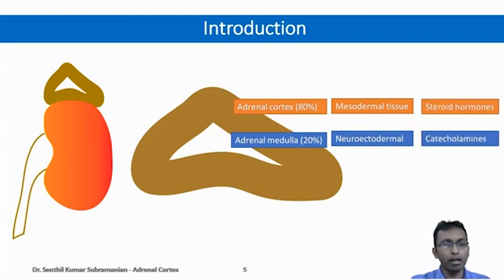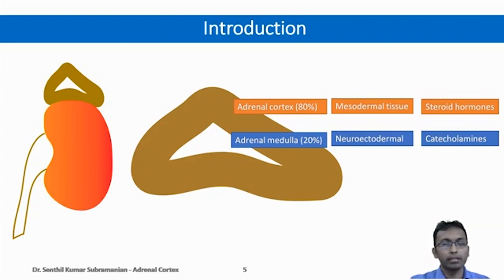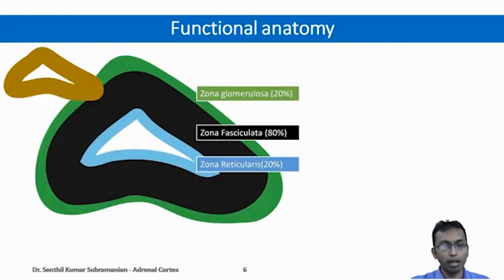While adrenal cortex secretes steroid hormones, adrenal medulla secretes catecholamines. Hence, adrenal medulla is a different type of endocrine organ compared to adrenal cortex. In this video lecture, we will be concentrating mainly on adrenal cortex. The adrenal cortex can be divided into three layers: the outer zona glomerulosa, the middle zona fasciculata, and the inner zona reticularis.